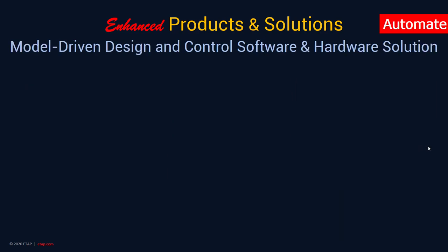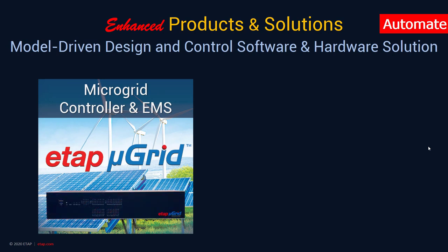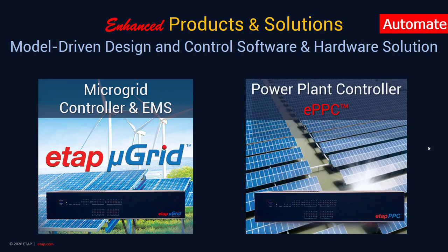ETAP20 includes enhancements to automation products such as model-driven design software and control hardware solutions. The microgrid controller and energy management system is a model-driven microgrid management and control system that includes an integrated, unique model-driven design software and control hardware combination to develop, simulate, optimize, validate, and control microgrids. The power plant controller (EPPC) is also a model-driven management and control system allowing renewable power plant owners and operators to visualize, predict, optimize, manage, and perform grid code compliance audits of solar and wind farms.